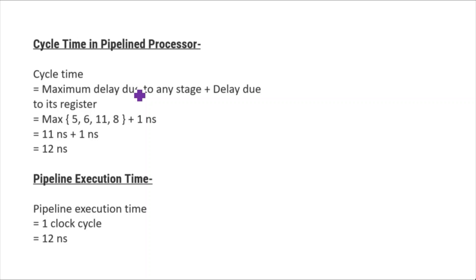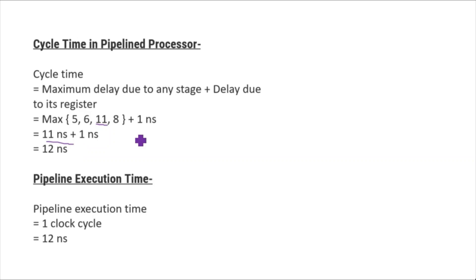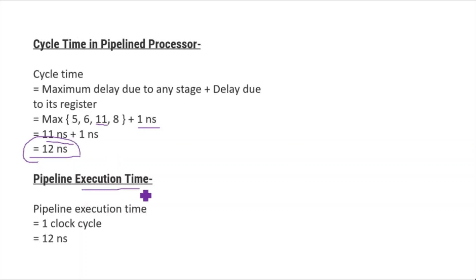For the pipeline processor, cycle time equals the maximum stage delay plus the delay of its register. The maximum stage delay is 11 nanoseconds, plus 1 nanosecond for the register, giving a cycle time of 12 nanoseconds. This cycle time equals the execution time for one instruction in the pipeline processor.